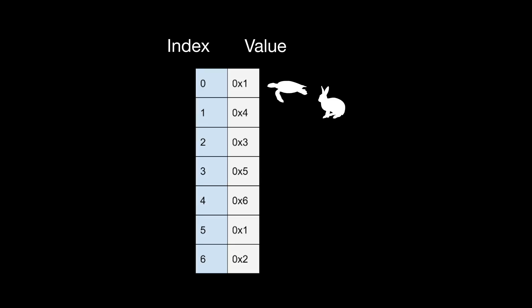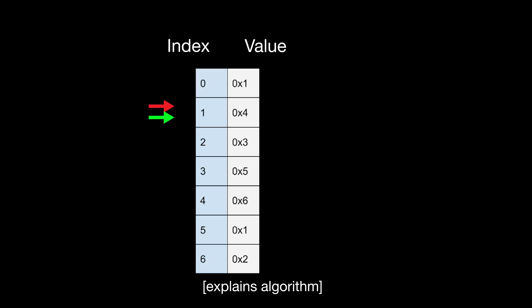the values of the array are like a pointer pointing to indices of the array, which are like nodes in our case. Because each number is from 1 to n, then each value will have to point to a valid index. And since there's a duplicate number, there will be a cycle. Find that cycle and you will have your answer.